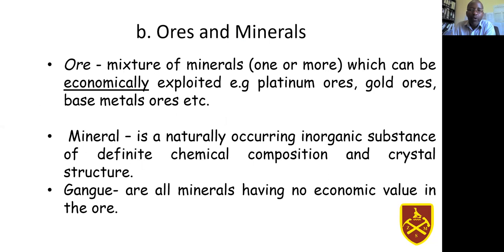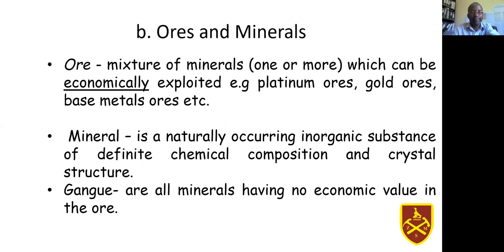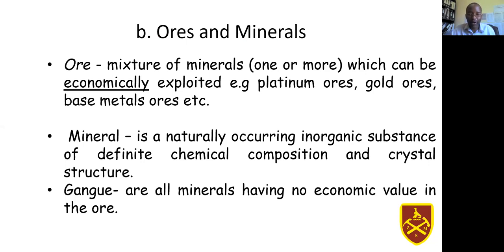Then we have the ore. When we talk of an ore, we are referring to a mixture of one or more minerals — you can talk of platinum ores, gold and base metal ores. The most common ores are the oxides, the sulfides, and the native ores. Native ores are elements that can occur on their own without reacting with other elements in the environment. Gold, for example, is a mineral that can occur in native form, and copper can also exist on its own without combining with other elements.